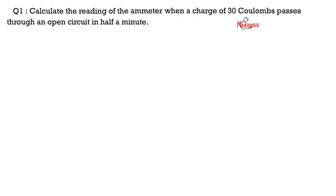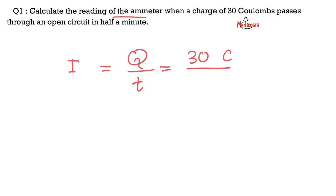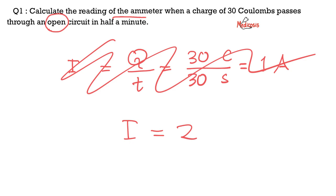Question number one: calculate the reading of the ammeter when a charge of 30 coulombs passes through an open circuit in half a minute. We want the reading of the ammeter, so they're asking about I, and I equals Q over T. Q equals 30 coulombs, and time is half a minute — 30 seconds — giving 1 ampere. But wait: because the circuit is open, no electric current is flowing. So I equals 0. As Dr. Thomas Sowell said, it doesn't matter how smart you are until you stop and think.